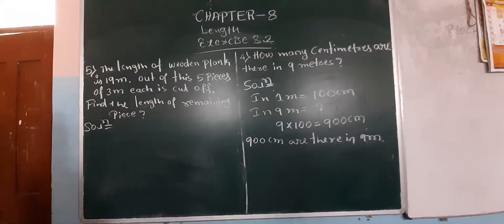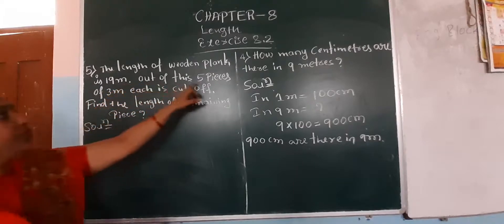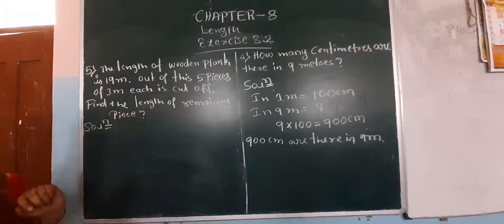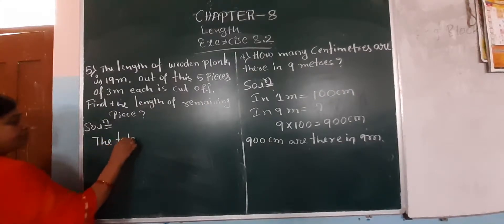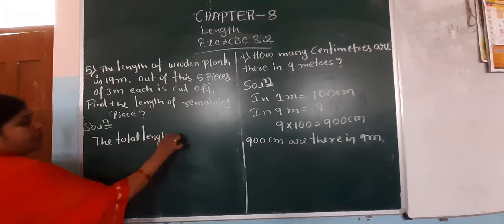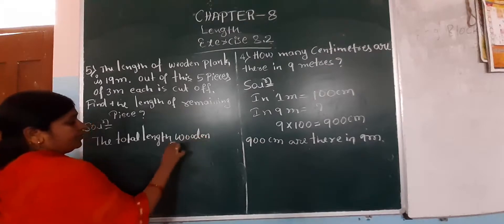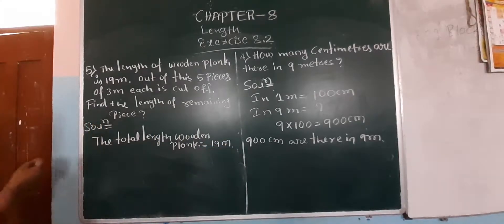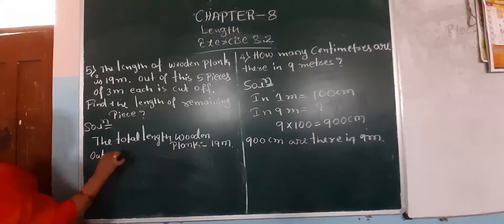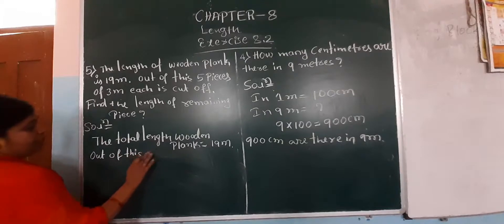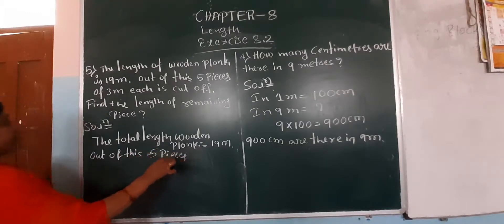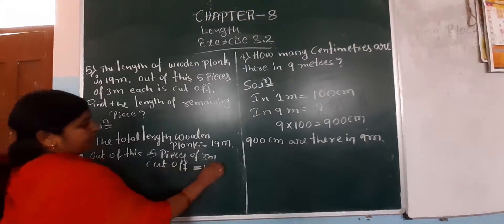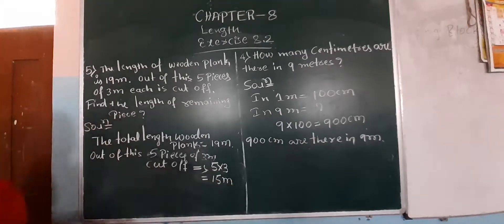Now the fifth question: the length of the wooden plank is 19 meter. Out of these, 5 pieces of 3 meter each are cut off. Find the length of the remaining piece. The total length of the wooden plank is 19 meter. 5 pieces of 3 meter means 5 into 3 equals 15 meter cut off.